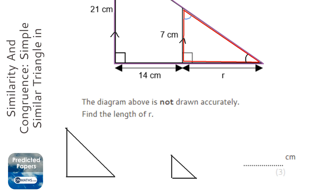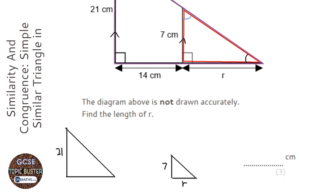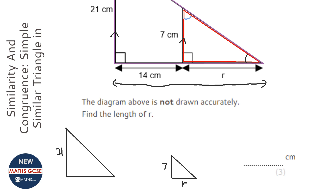The smaller triangle has seven centimetres, and the base of the smaller triangle is r. The base of the bigger triangle — and this is really common to get wrong — it's not just 14; it goes 14 here and then r for the rest of it, so in total it's 14 plus r.